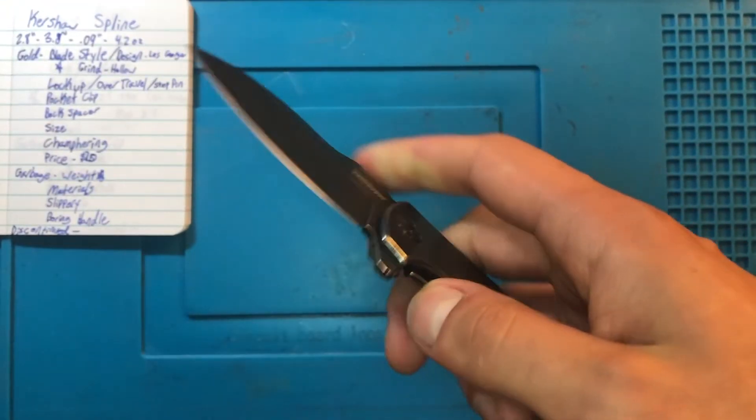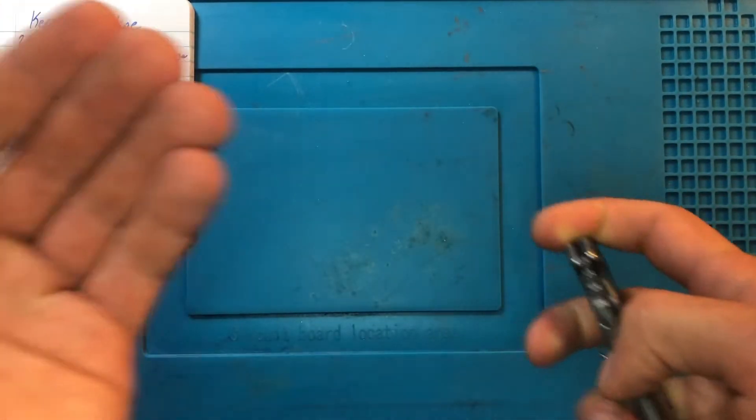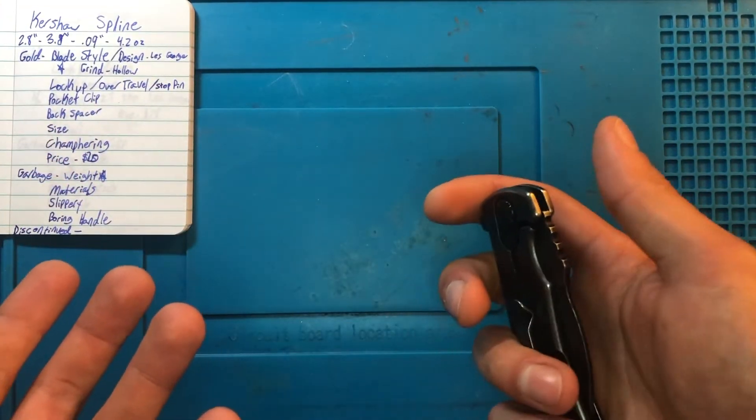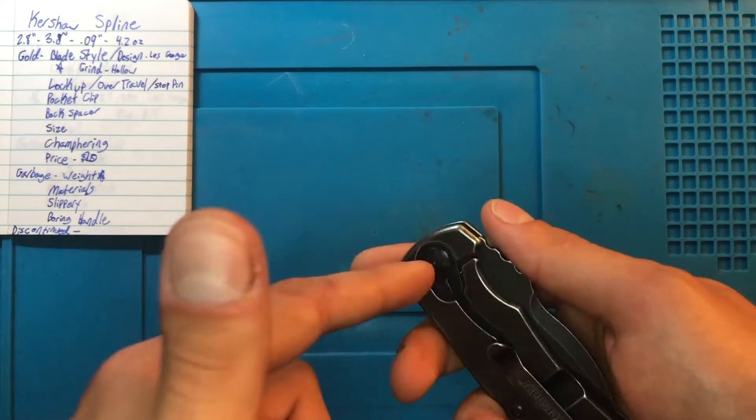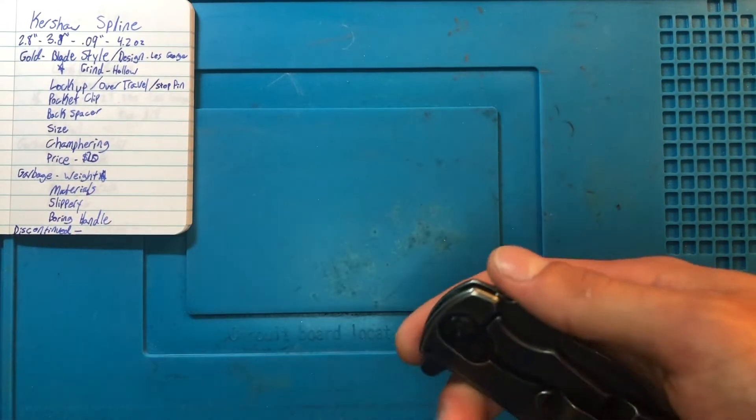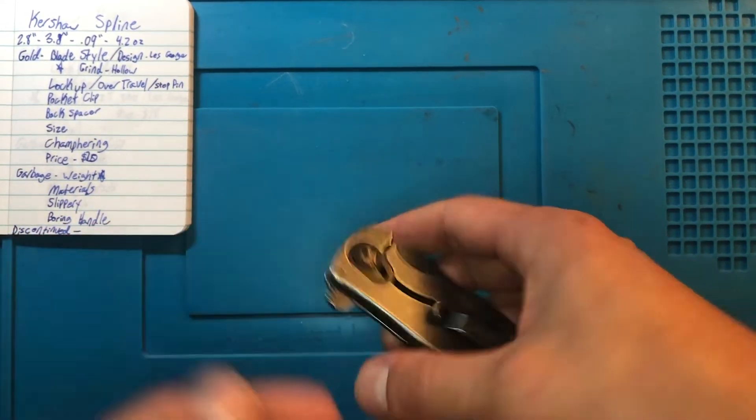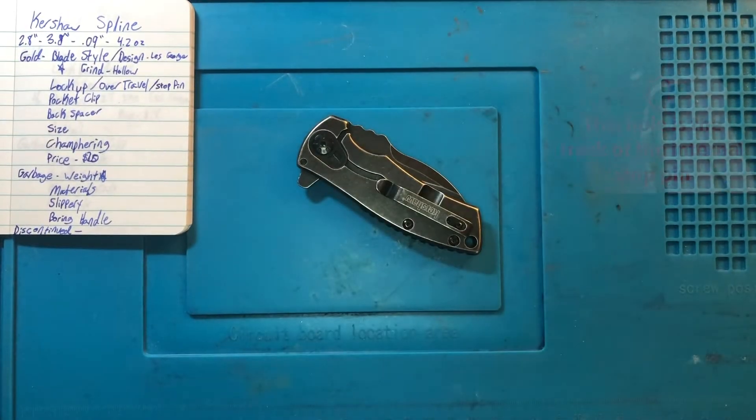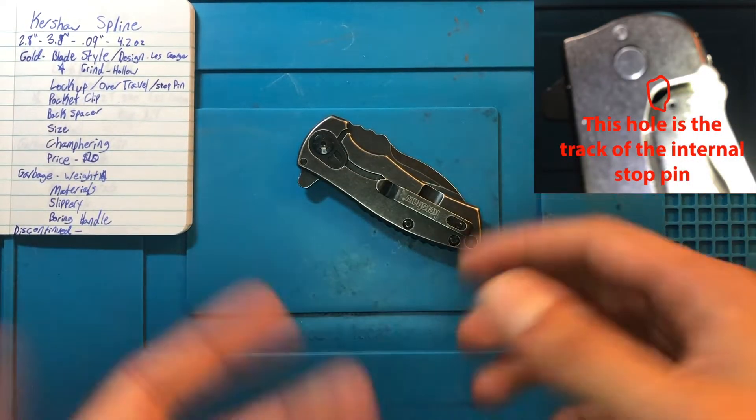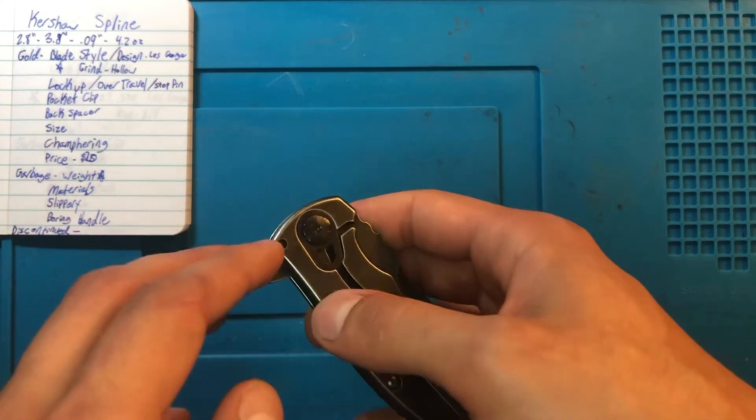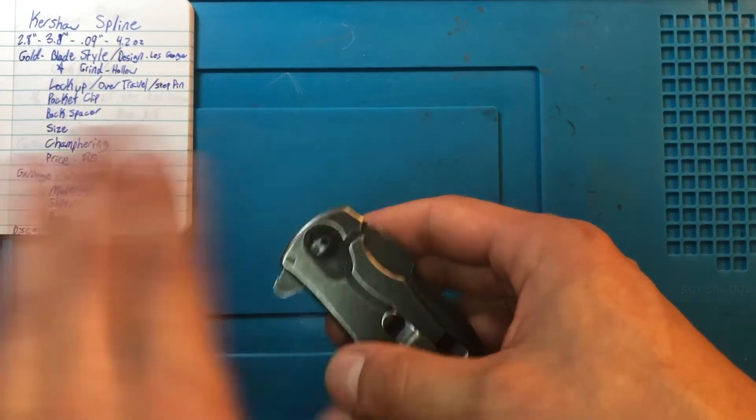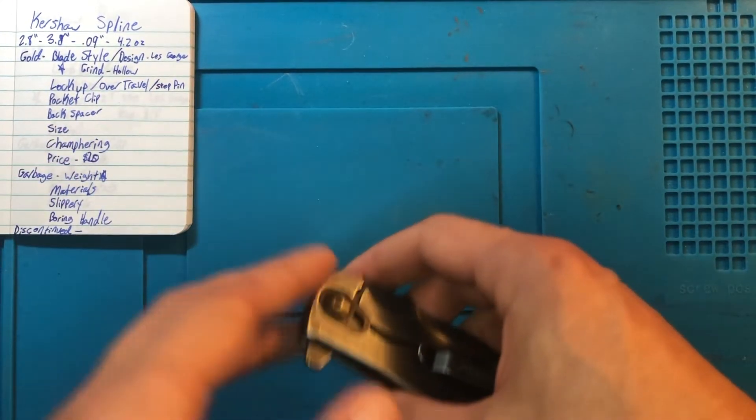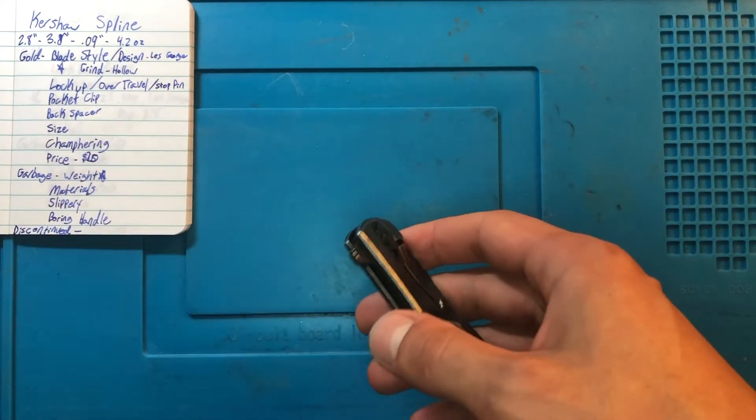The reason that this is a better design, I don't know if it's cheaper, I assume that it is, to do an internal stop pin versus this, is that the internal stop pin will get gunked up with the travel of the blade, whereas this one is completely isolated from the blade. It's completely independent. Not a big deal, but still very cool.